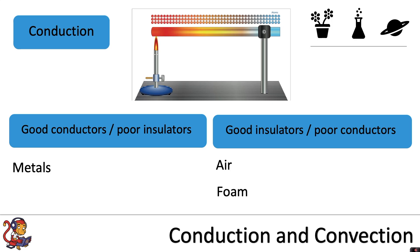Materials that are good insulators and therefore poor conductors include things such as air, foam, plastic, rubber and wood.